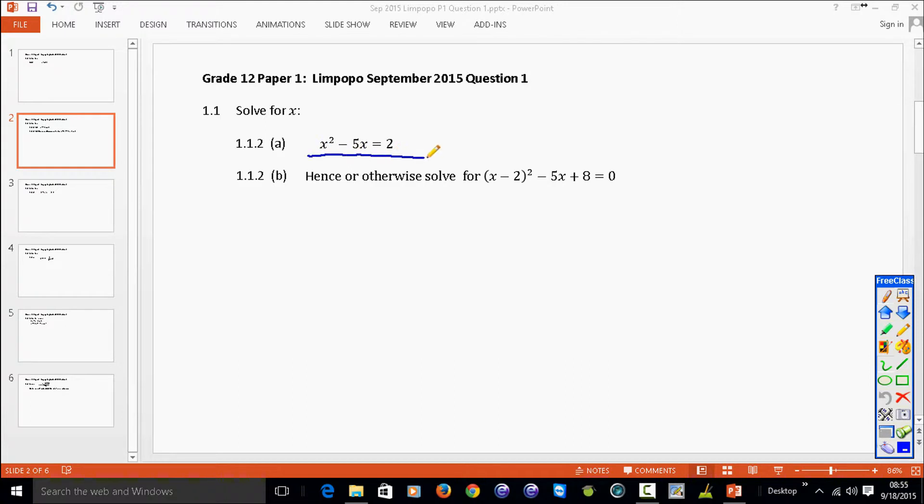So the first one, simple quadratic equation, x squared minus 5x. Let's write it in standard notation, minus 2 is equal to 0. And you can try as you may, but you will not be able to solve it by factorization, so you have to use the formula.